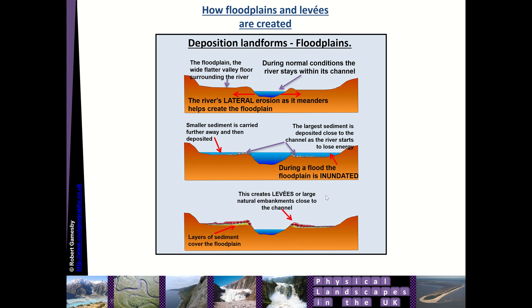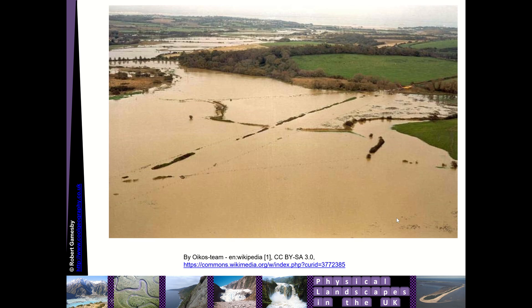Over long periods of time this means we get multi-layered floodplains — with fine sediment deposited further away from the channel, and bigger sediment close to it. The big stuff builds up into mounds which we call levees — large natural embankments — while the smaller stuff is layered further away. You can see that process in action here during a flood; you can see how much sediment is in the water, and that sediment will be deposited onto the floodplain, building up its level.